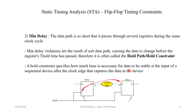Now let's see the second problem in synchronous design: the min delay problem. The min delay problem occurs when the data path is so short that it passes through several registers during the same clock cycle. When the clock-to-Q delay plus the combinational logic delay is too short — less than the hold time of the second flip-flop — there is a chance that the previous data might not have been written properly into the capture register. This problem is called the min delay problem and it is associated with the hold time of the flip-flop.